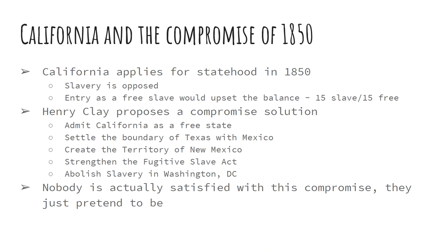The Treaty of Guadalupe Hidalgo, signed in 1848, gave California to the United States. Massive numbers of people flowed to California using the California Trail in 1848–1849, and gold was discovered in 1849, bringing even more people. By 1850, California is ready to become a state. The white settlers of California opposed slavery — not on moral grounds, but because they feared competition. They wanted to keep as many people out of California as possible. Now, entry into the Union as a free state instead of a slave state would upset the balance, because at that time there were 15 slave and 15 free states.